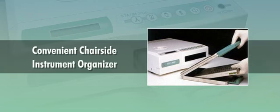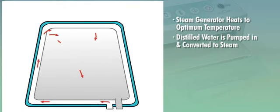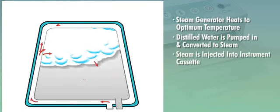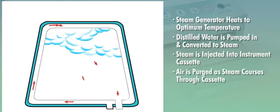When start is pressed, the steam generator heats to the optimum temperature and distilled water is pumped in and converted to steam. A wall of steam is then injected into the instrument cassette.